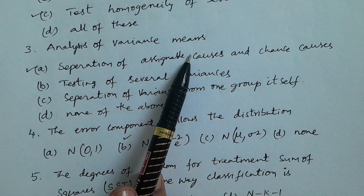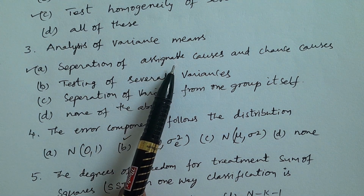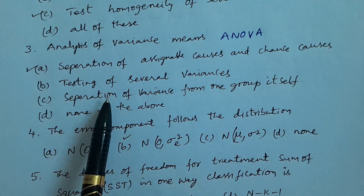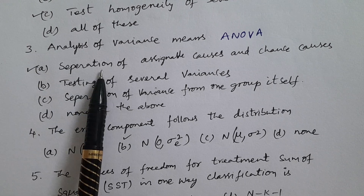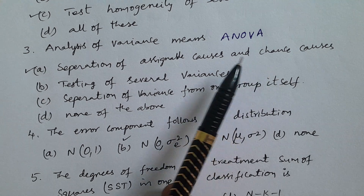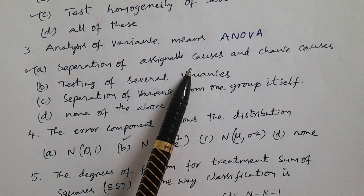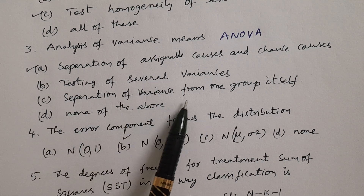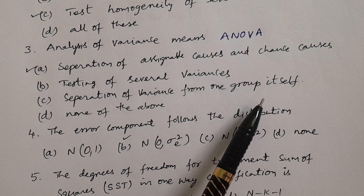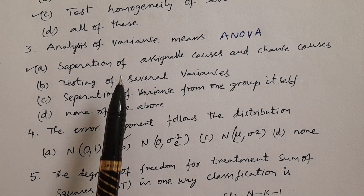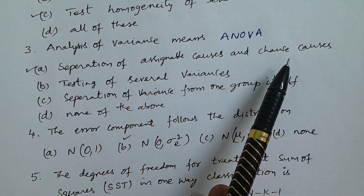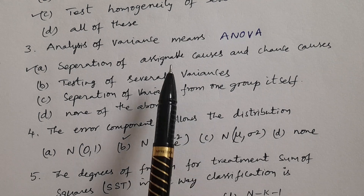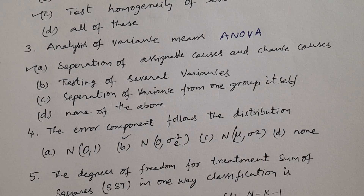In Telugu: Analysis of Variance — ANOVA — means the separation of Assignable Causes and Chance Causes. Option A, Separation of Assignable Causes and Chance Causes, is correct. Option B is Testing of Several Variances; Option C is Separation of Variance from One Group Itself; Option D is None of These. The answer is A — Separation of Assignable Causes and Chance Causes — which is one important definition of Analysis of Variance.